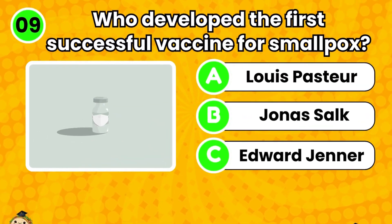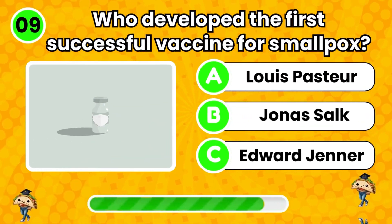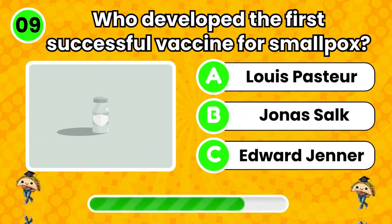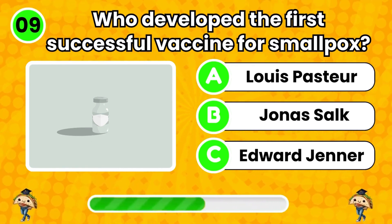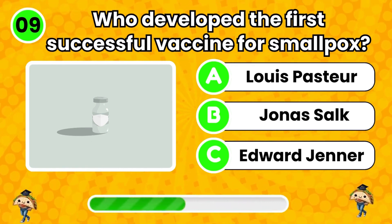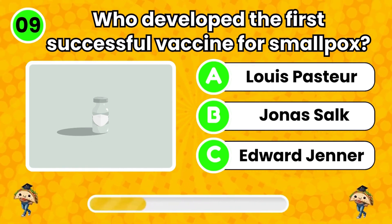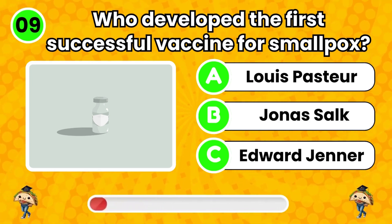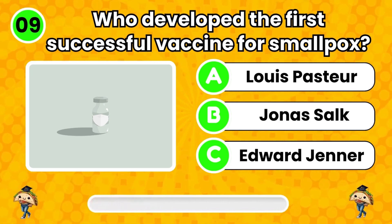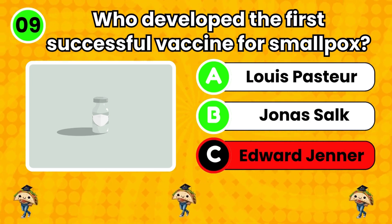Question 9. Who developed the first successful vaccine for smallpox? Edward Jenner. That's right!